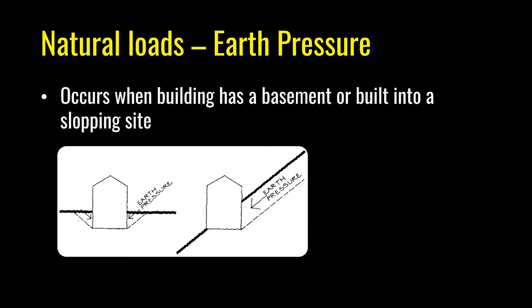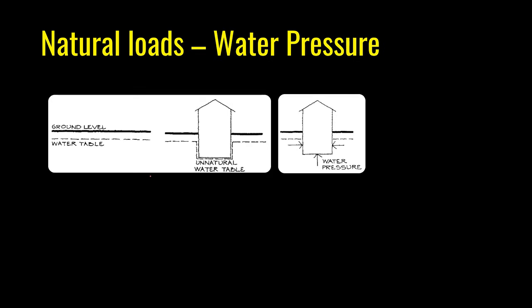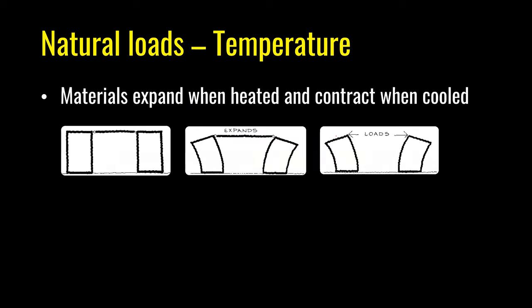Earth pressure occurs when a building has a basement or is built into a sloping site — the structure must resist natural loads from earth pressure. Below the earth's surface there is water; the top level of this water is called the water table. The level may be at the surface in swamps and beaches, or many meters down in deserts. If a building interrupts the natural water table, an unnatural water table is created, and water pressure will cause upward loads, causing the building to try to float.